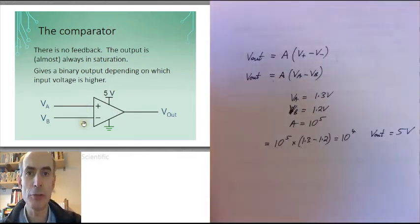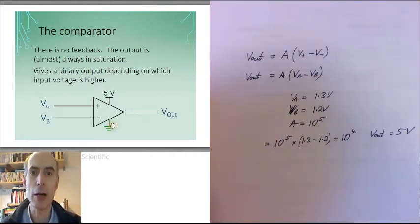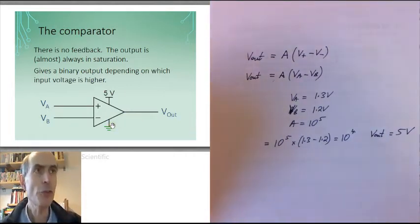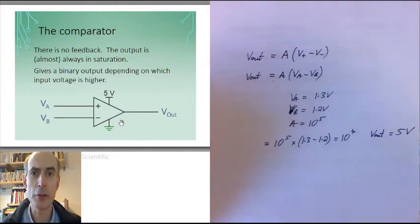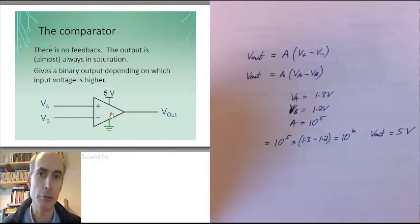On the other hand, if VA was less than VB, then the output of the op-amp would be at its lowest possible voltage, which in this case is ground. So this circuit works very well as a comparator, provided the difference between VA and VB is greater than a few tens of microvolts.